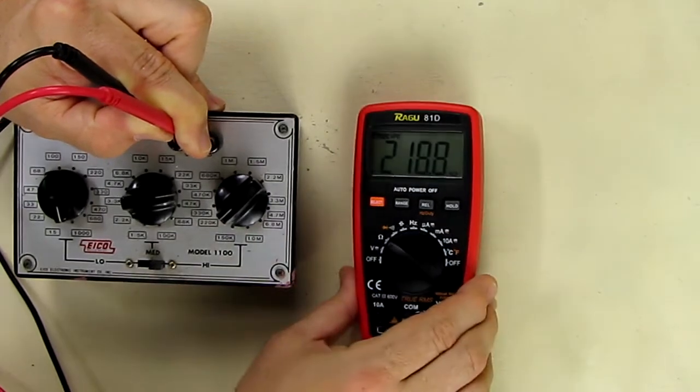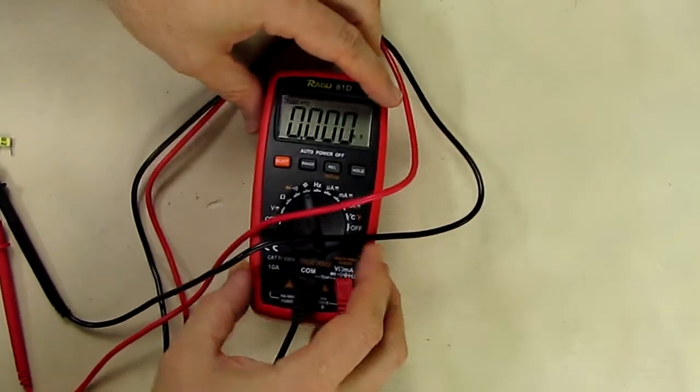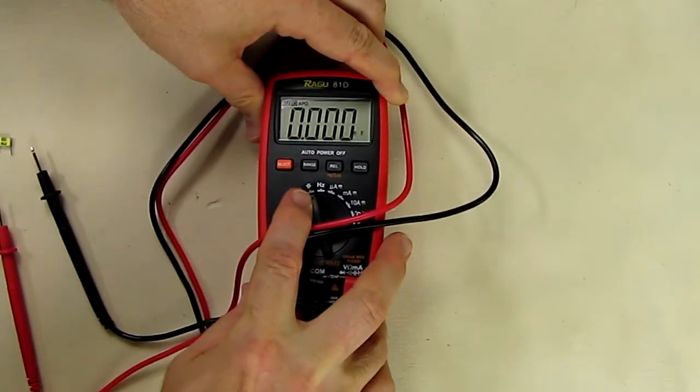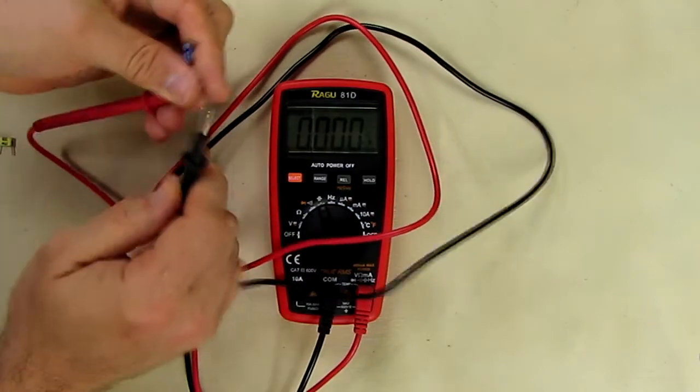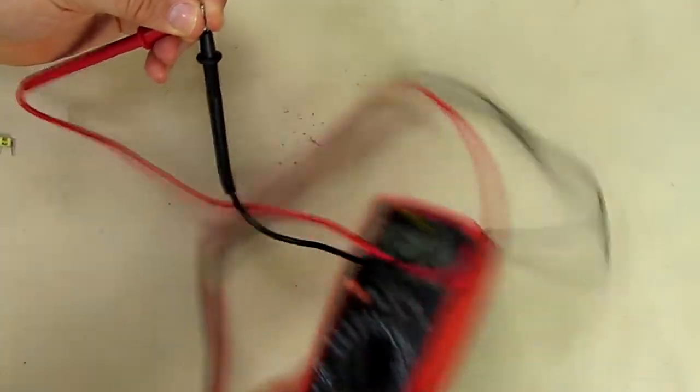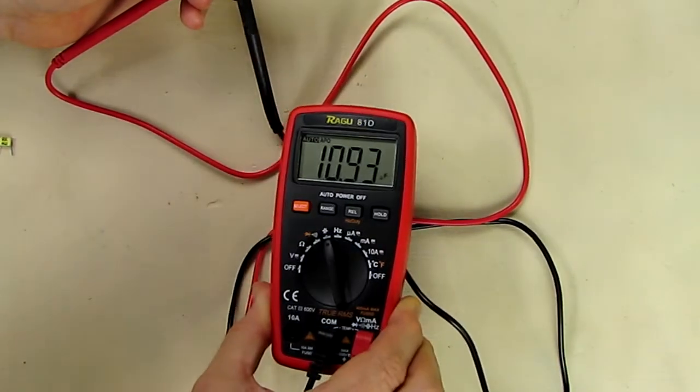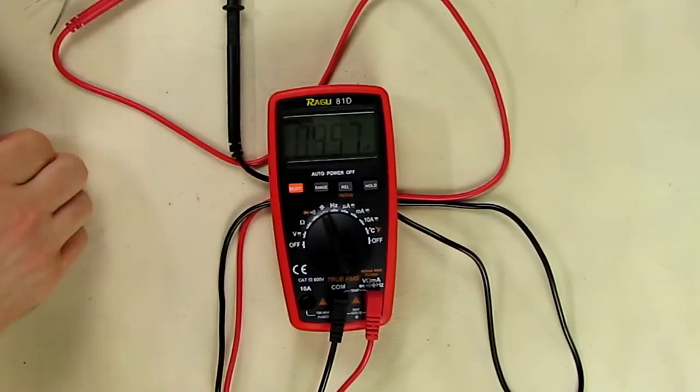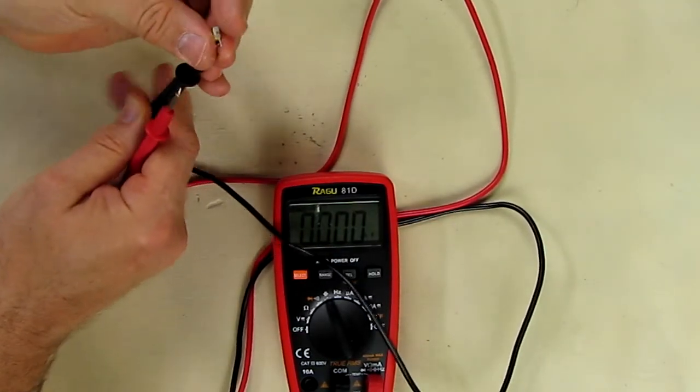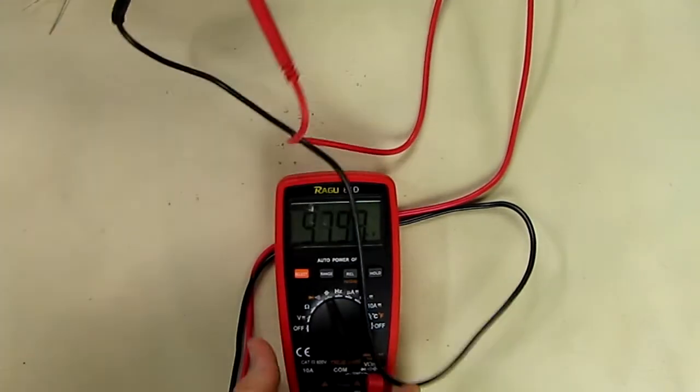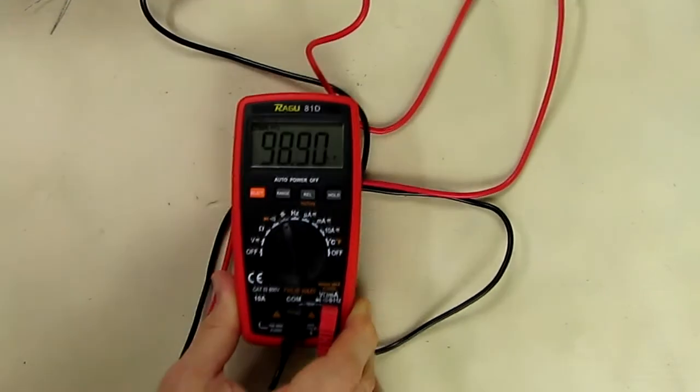Let's try the capacitor measuring function, put it to the capacitor setting right there and this is a 10 microfarad electrolytic and let's put it across there and it comes up at 10.94 microfarads which is correct. And I have a little ceramic, this should be about 0.1 microfarad or 100 nanofarads and it comes up 98 nanofarads which is correct, so very handy to have that.